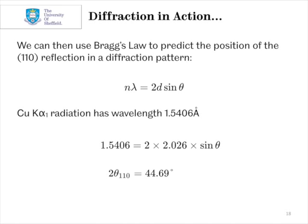We almost always take the order of reflection n to equal 1 when we're doing x-rays as our e-wear. So, we can easily substitute the values in there and work out that the peak would occur at 44.69 degrees 2θ in our diffraction pattern.